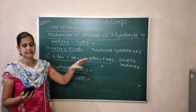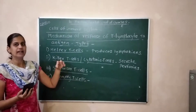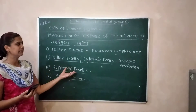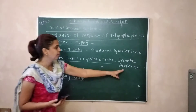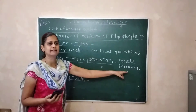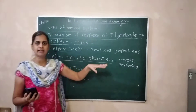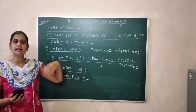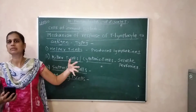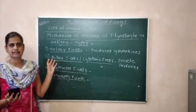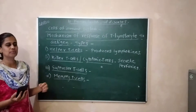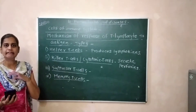Cytotoxic T-cells attack and destroy. The bacteria or infected cells are made toxic. They work to be toxic to infected cells and directly invade and destroy microbes.